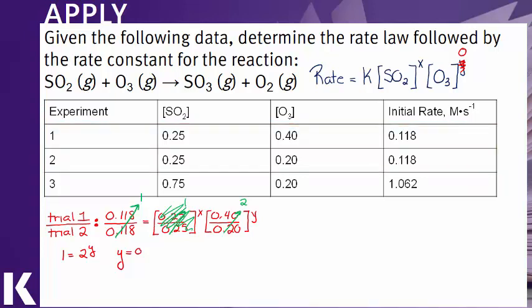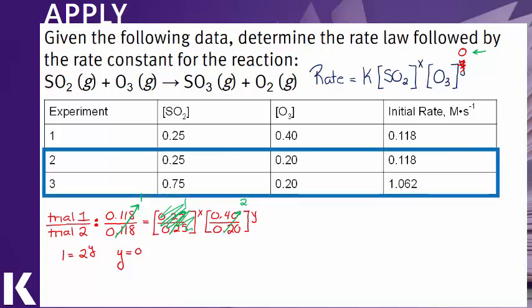Now we have to figure out what the order is for sulfur dioxide. At this point it doesn't really matter what the concentration of ozone is since we've already determined that it is zero order. So let's look at trials two and three.